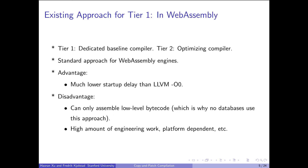For WebAssembly, the standard approach employed by both browsers and non-web runtimes for the tier one compiler is to have a dedicated baseline compiler. A baseline compiler only scans through the WebAssembly bytecode once, and as it scans through the bytecode, it determines what machine instructions to emit using a platform-dependent assembler. The advantage is that the startup delay is much lower than LLVM O0. However, the disadvantage is that it only works for low-level bytecode — so no databases employ this approach as far as we know — and the amount of engineering work is really high.